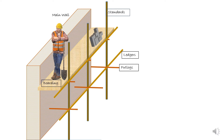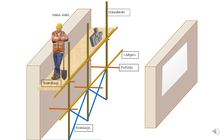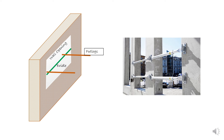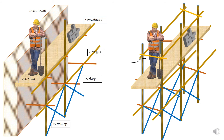For additional support, we provide bracings. Braces are diagonal members fixed on the standards to provide lateral support to the whole framework. Another important part is the bridle. A bridle is a small member used to bridge an opening in the wall so that it can support one end of the put log. In wall openings, we use a small member called a bridle to give this support.